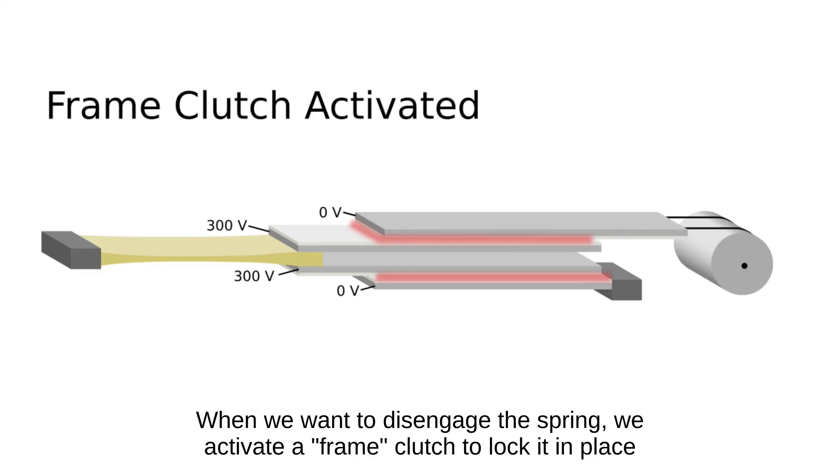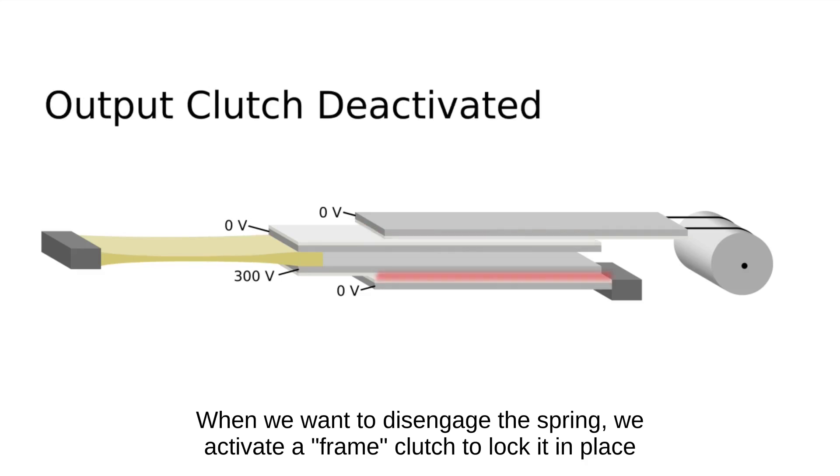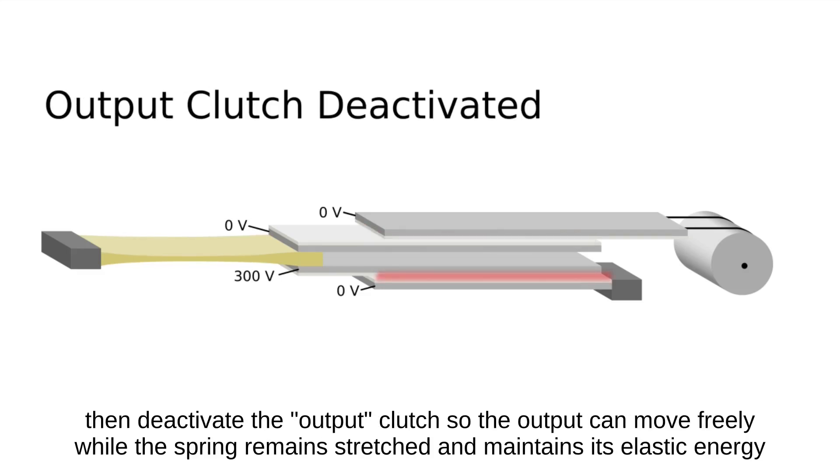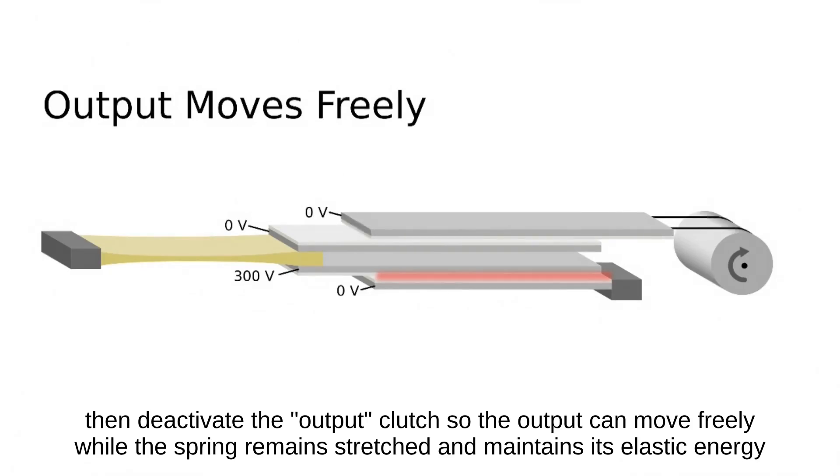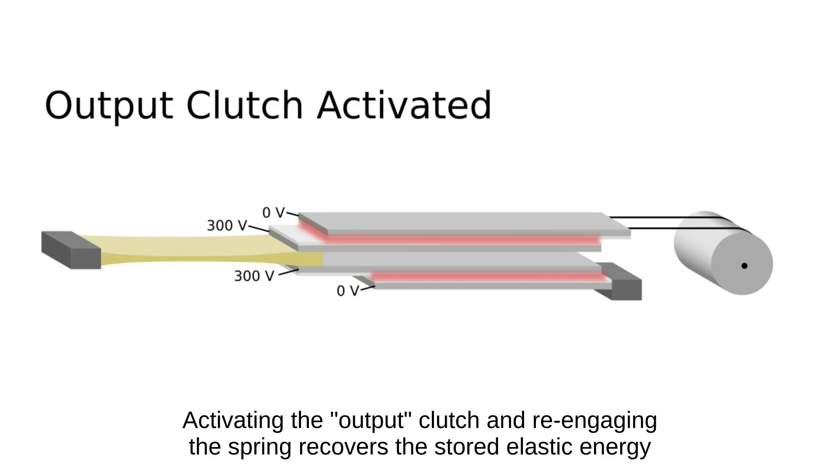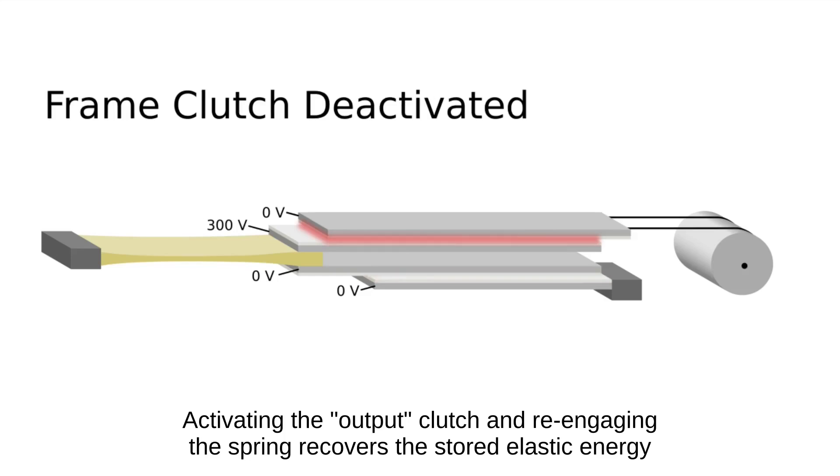When we want to disengage the spring, we activate a frame clutch to lock it in place, then deactivate the output clutch so the output can move freely while the spring remains stretched and maintains its elastic energy. Activating the output clutch and re-engaging the spring recovers the stored elastic energy.